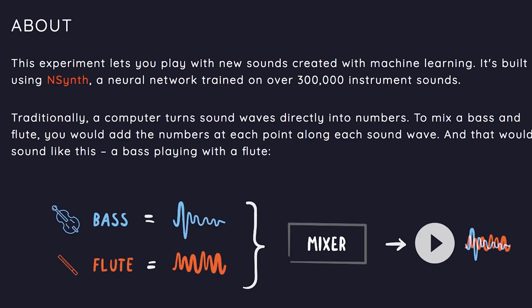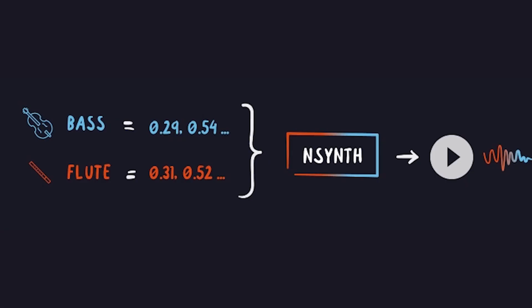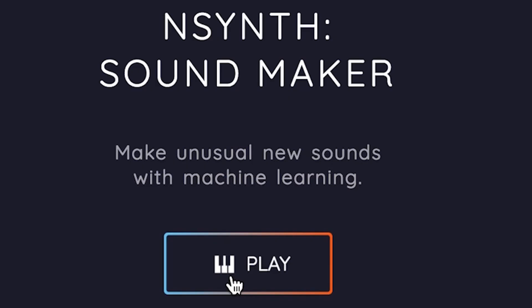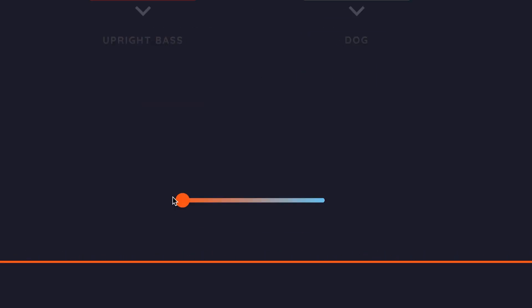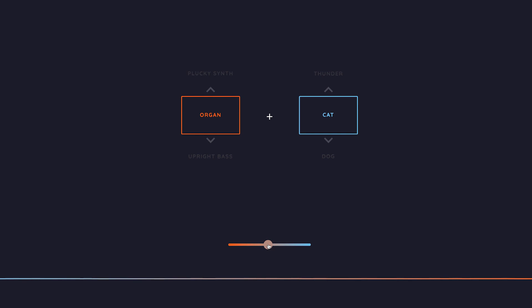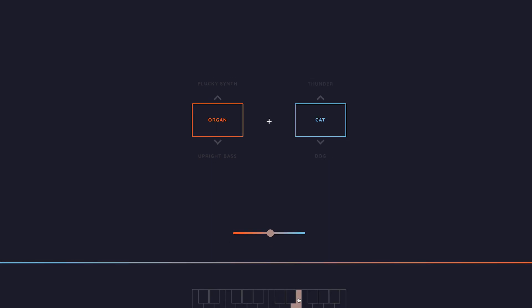It's simple to use and creates sounds as beautiful as that red-throated loon. Read up on how it works here to see how it mixes two sounds together — the example given is a flute and a bass. But to create your own hybrid of sounds, click play and choose from each category. Haven't you always wanted to hear a cat mixed with an organ? Sliding this scale will determine how much organ you hear or how much cat, and you can experiment with the notes down here.